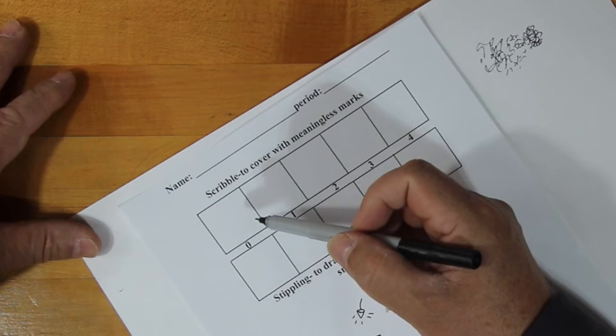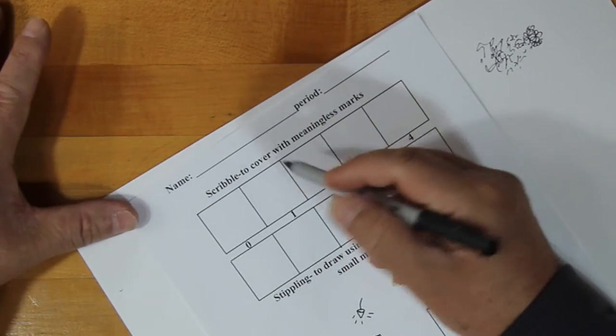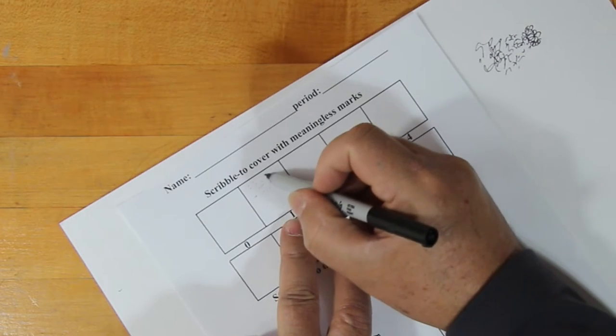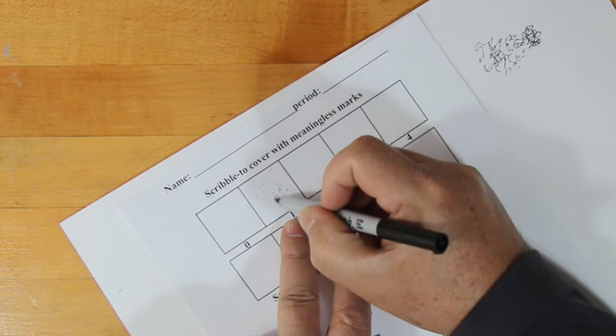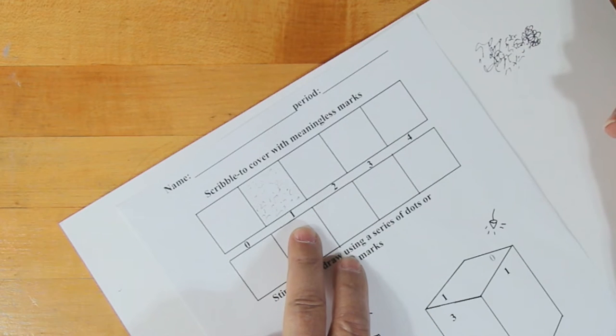Zero, on the white sheet of paper, we're going to leave that blank. So for the one, we need that to be relatively light. So all I'm going to do here is I'm just going to scribble, but very, very little. So that's it.